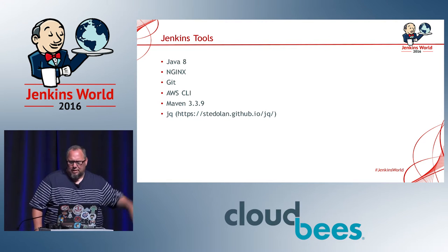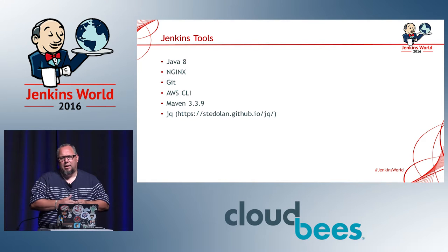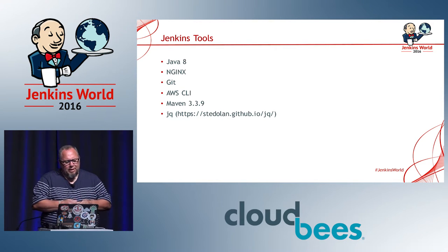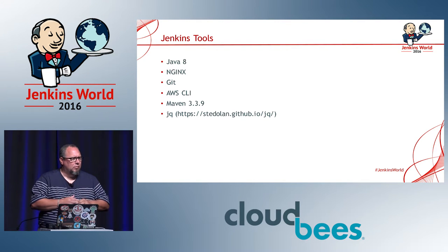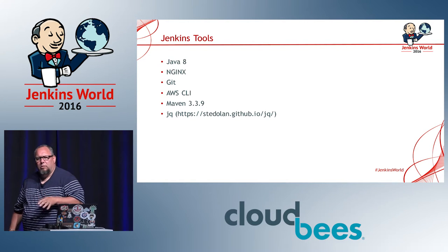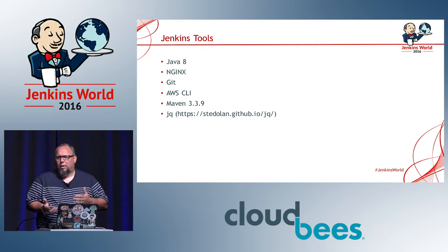For my Jenkins, I built it by hand. I built it with Java 8 and an Nginx front end. It has Git on it because it has to talk to CodeCommit. I'm using an Amazon Linux 64-bit HVM AMI, which comes with AWS CLI. I'm using Maven 3.3.9, and then I'm using JQ. JQ is a command-line parser for JSON files — it uses JMES path syntax, almost like XPath for JSON. This becomes important later when I make calls to AWS and need to extract IP address and instance ID from the returned JSON.